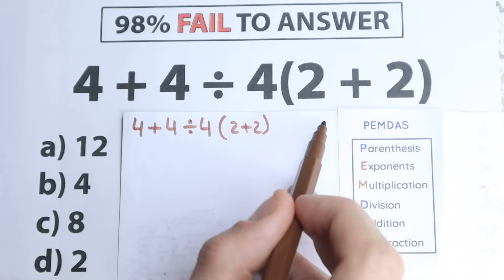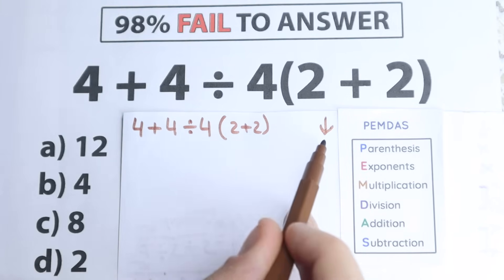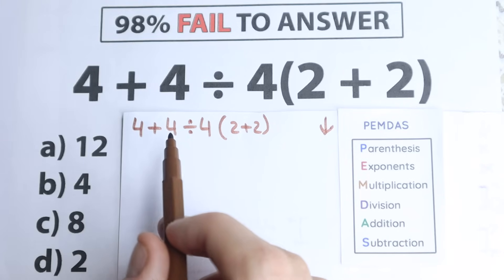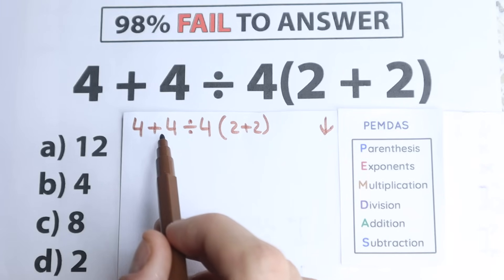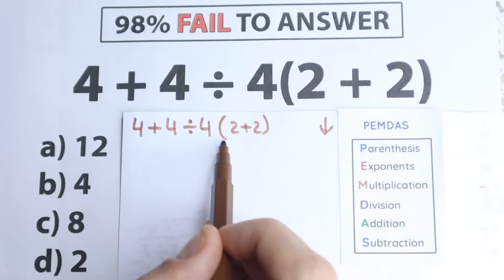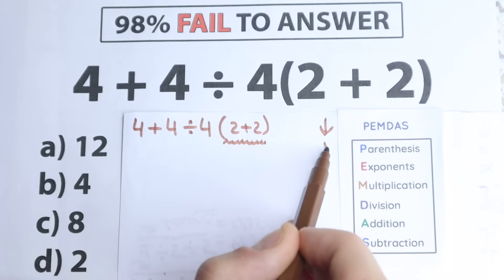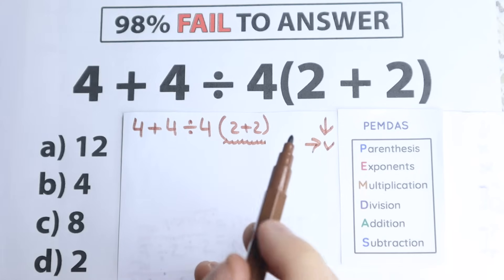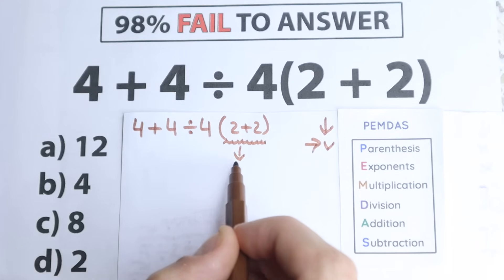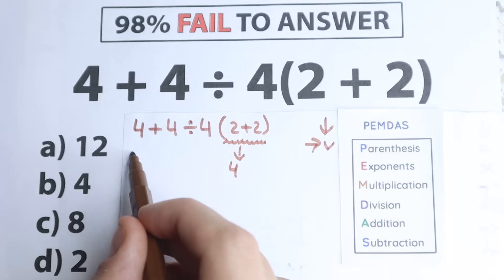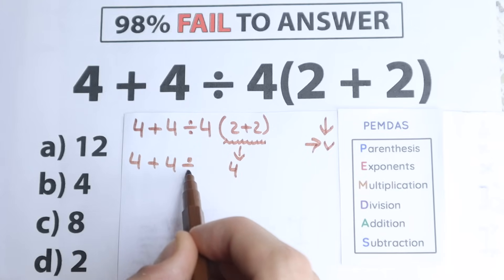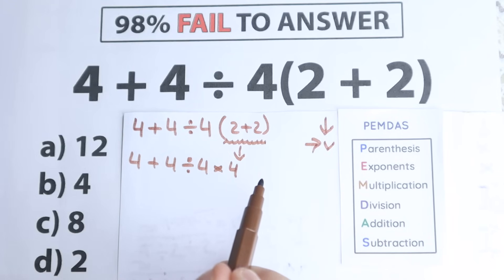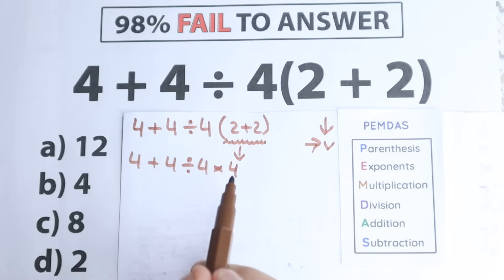Let's solve it according to PEMDAS. PEMDAS works from the top to the bottom and we look at it through the steps. The first step is Parentheses. Let's scan where we have parentheses. We have addition — not parentheses. Division — not parentheses. Yes, right here we have parentheses. So 2 plus 2 equals 4. And now we have the expression 4 plus 4 divided by 4, times 4. It doesn't matter what order of operation — every time you need to start from parentheses.